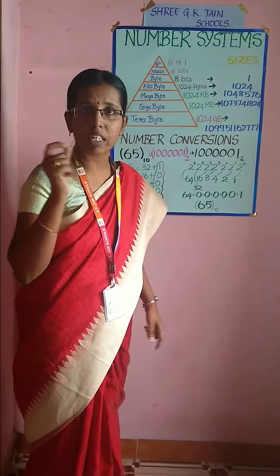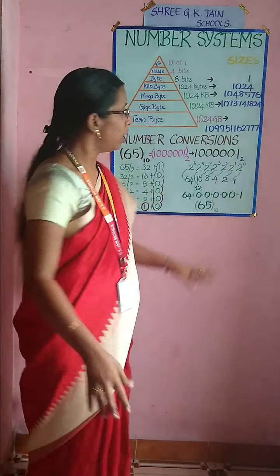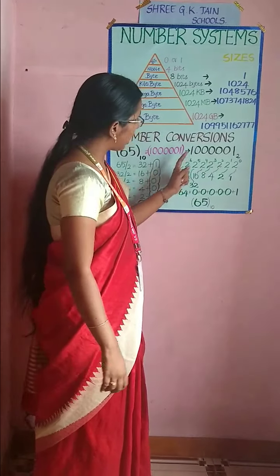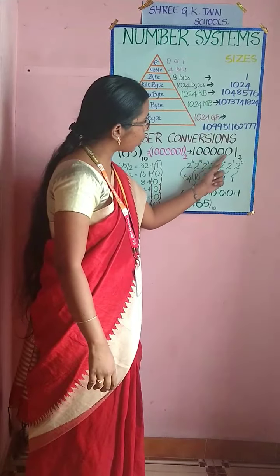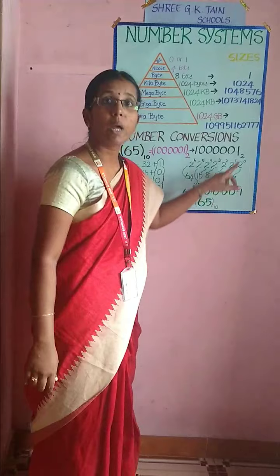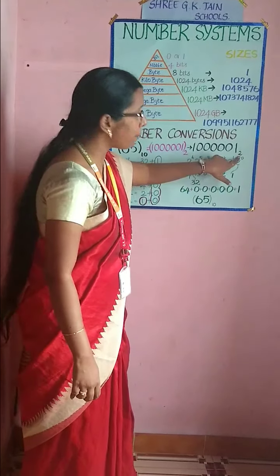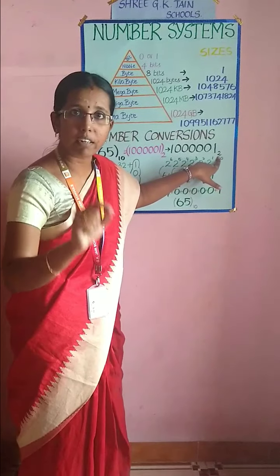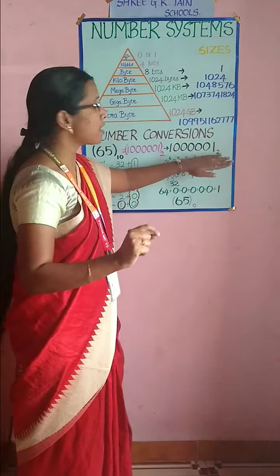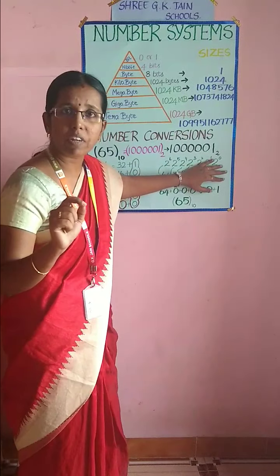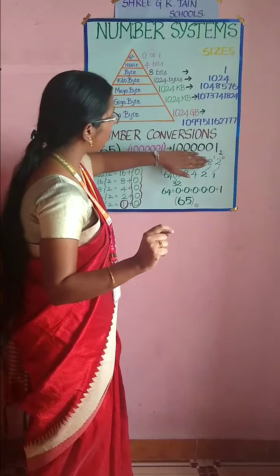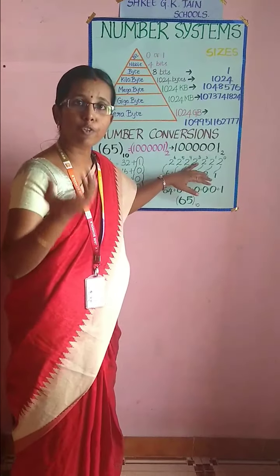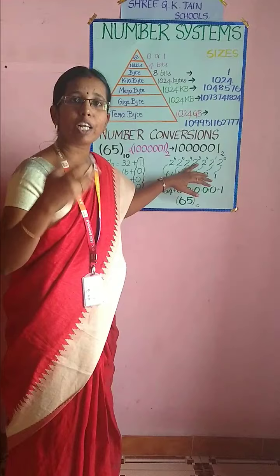I will start with the first conversion technique. For example, if the question says convert this binary number to an equivalent decimal number, the number given is 1000001 base 2. From the base itself you can identify it is a binary number. If a digit other than 0 or 1 — like 2 or 3 — appears, it will definitely not be a binary number, because binary numbers consist only of 0 or 1.